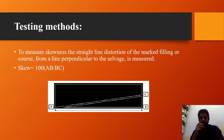To measure skewness, the straight-line distortion of the marked filling or course from a line perpendicular to the selvage is measured using the formula: skewness = 100 × AB / BC.